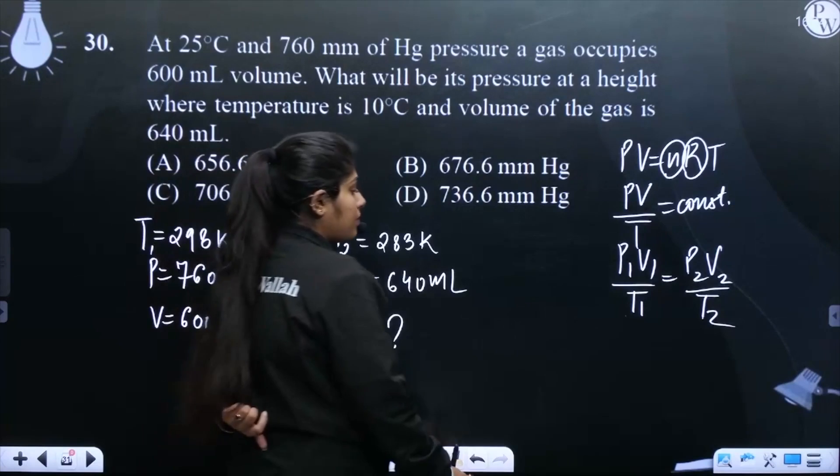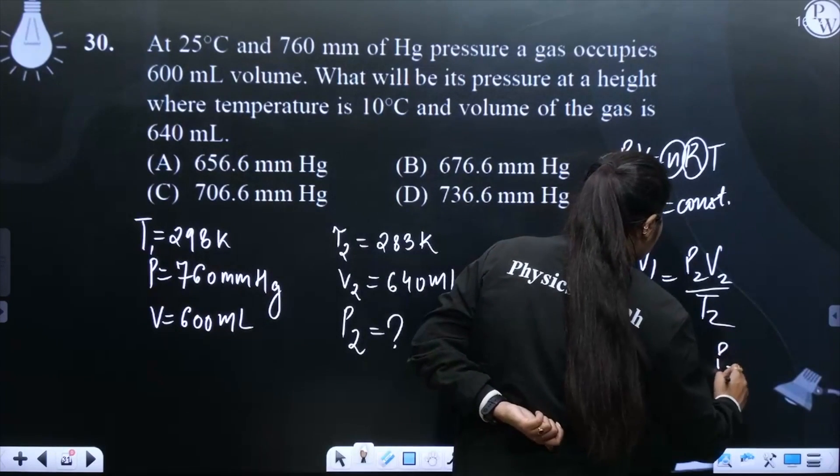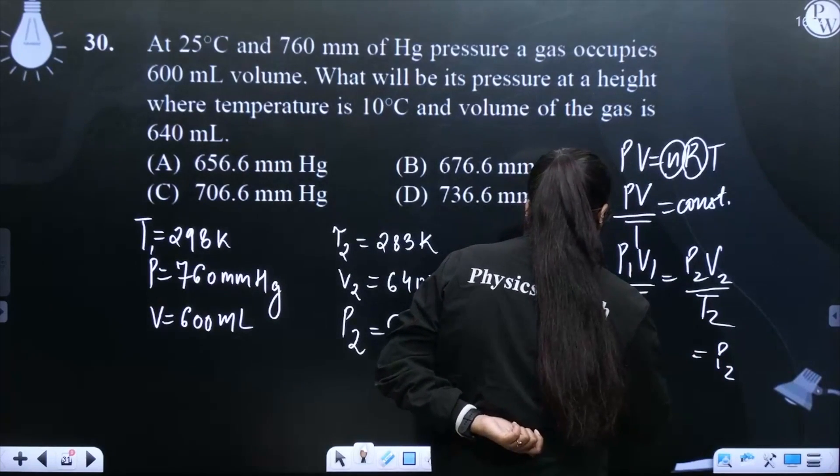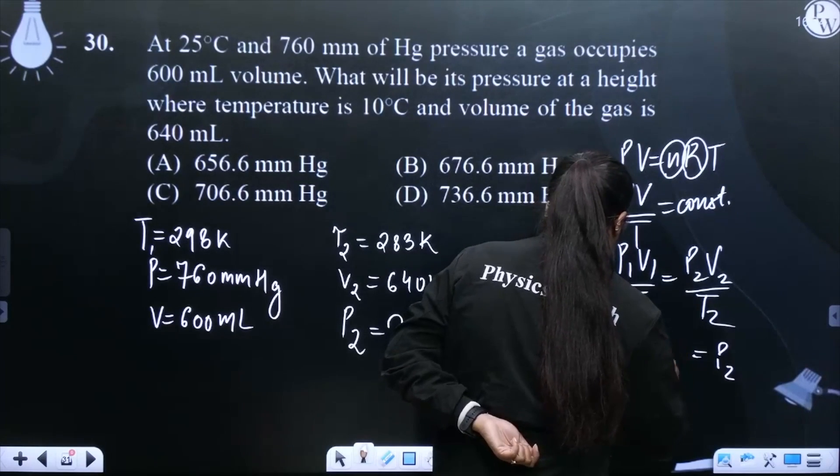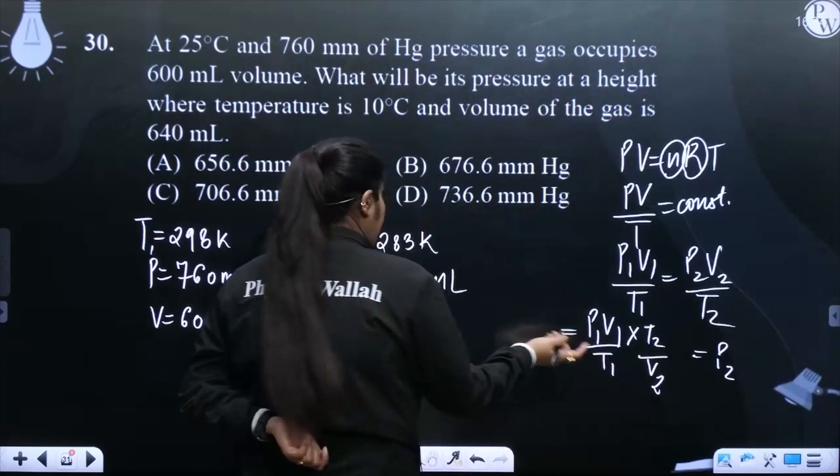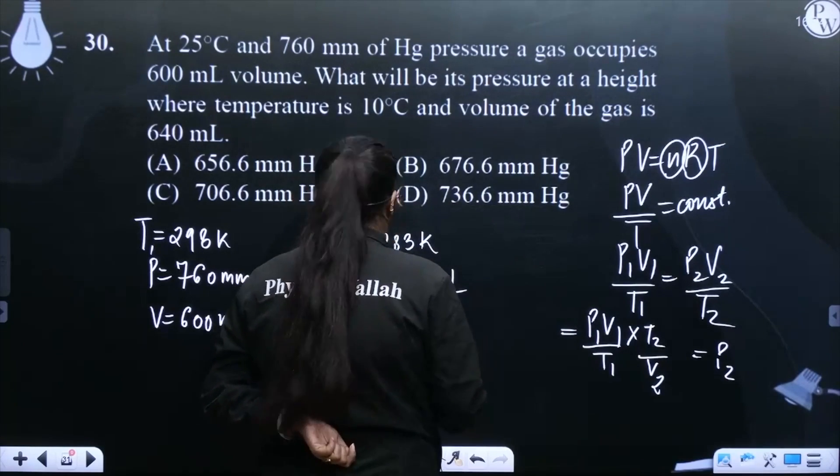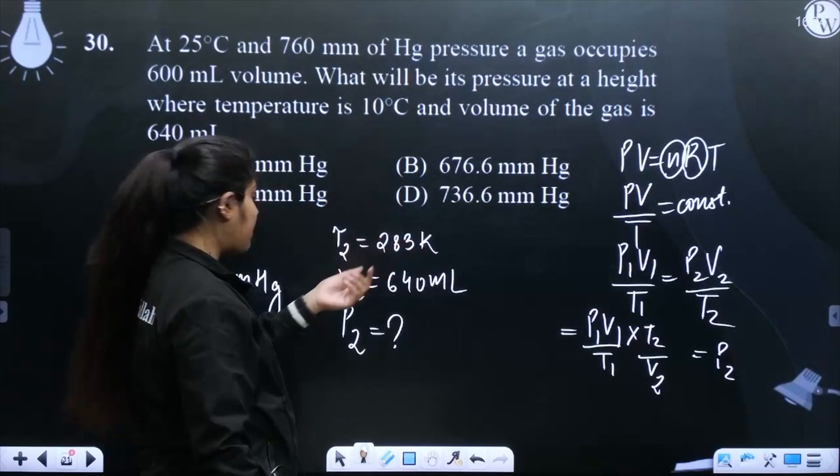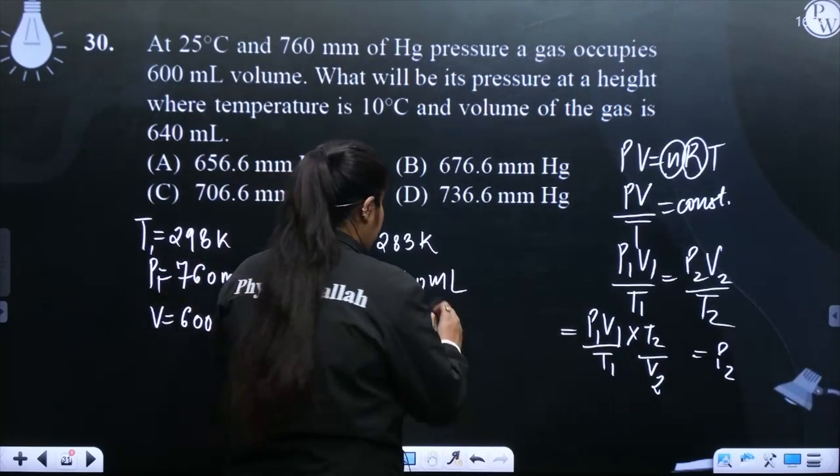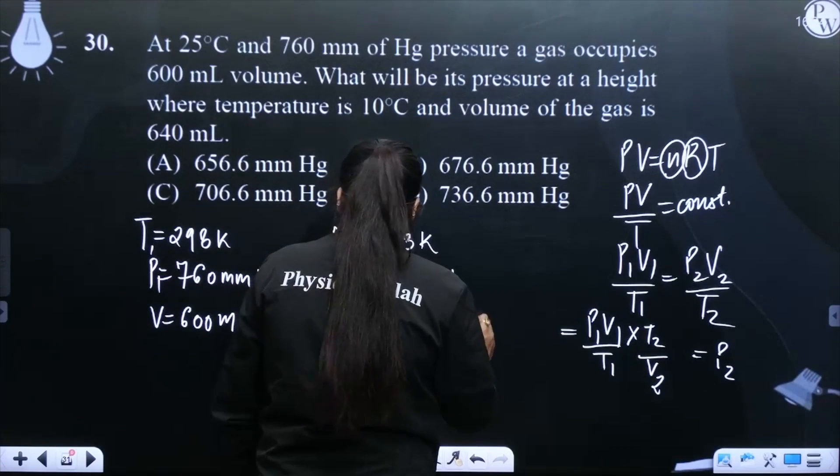We have to find P2. So to find P2, the equation becomes P1 V1 upon T1 into T2 upon V2. Now we'll put in the values.